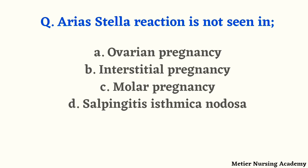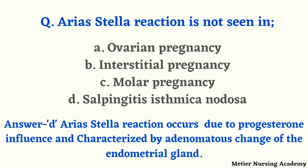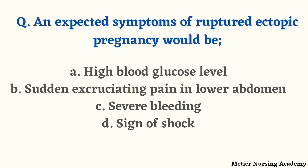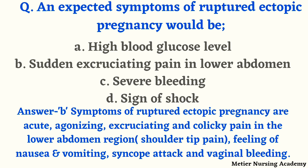Arias-Stella reaction is not seen in — ovarian pregnancy, interstitial pregnancy, molar pregnancy, or salpingitis isthmica nodosa? The right answer is option D, salpingitis isthmica nodosa. Arias-Stella reaction occurs due to progesterone influence and is characterized by adenomatous changes of the endometrial gland. Expected symptoms of a ruptured ectopic pregnancy — options are: high blood glucose level, sudden excruciating pain in the lower abdomen, severe bleeding, or sign of shock. The right answer is option B, sudden excruciating pain in the lower abdomen. Symptoms include acute agonizing, excruciating, colicky pain in the lower abdomen, shoulder tip pain, nausea, vomiting, syncope, and vaginal bleeding.